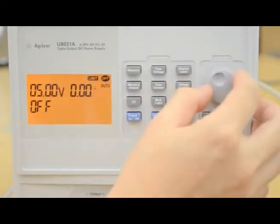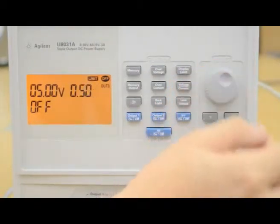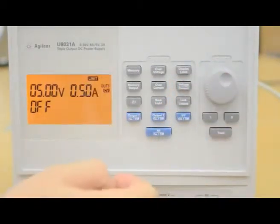Press the voltage current button to set the current limit. Turn the knob until the display shows 0.5 amps. Turn on output 1 now.